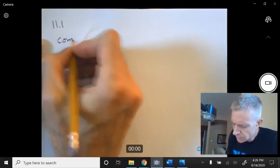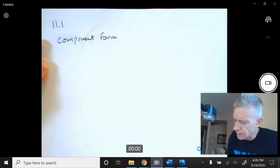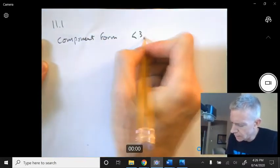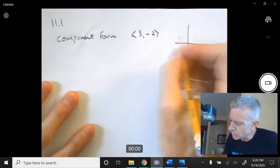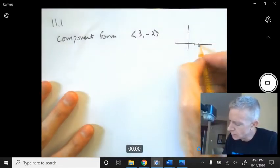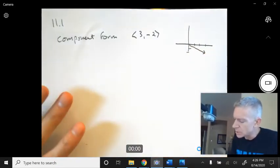Component form of a vector. Let's say I have a vector that is <3, -2>. As you know, that's just a vector that goes right 3, 1, 2, 3, and down 2. If I draw this vector right there, it's in standard position.